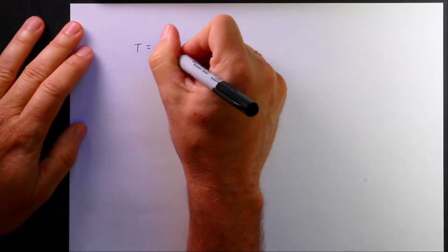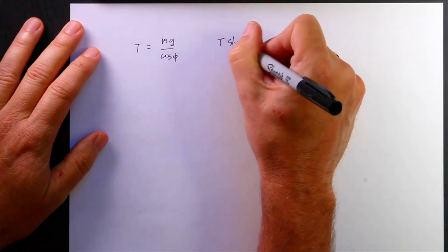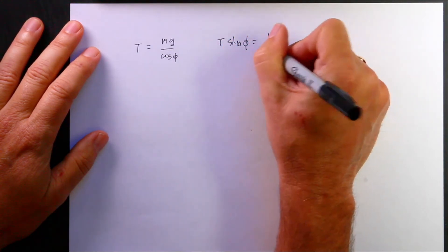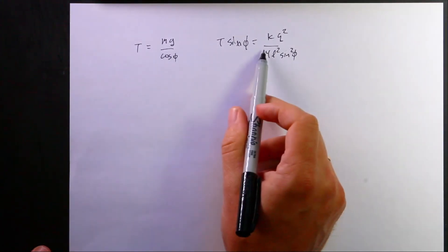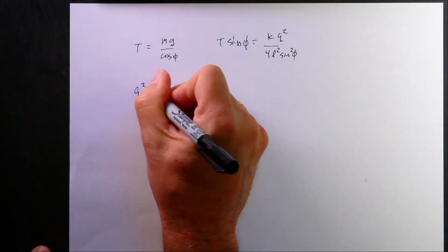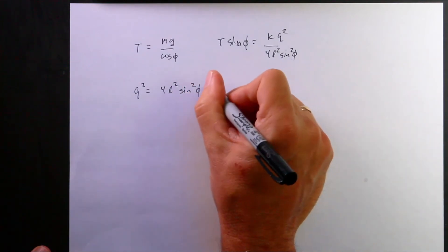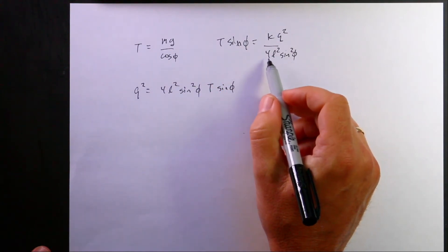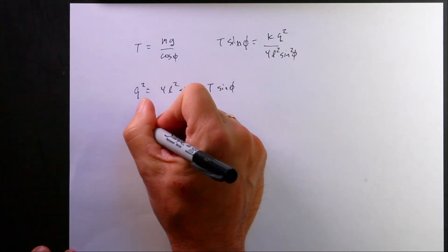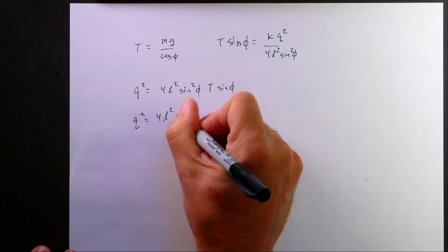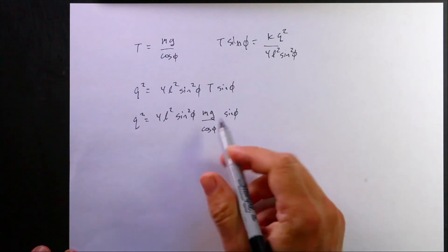So I have T equals Mg over the cosine of phi. And then I have, I'm going to rewrite this as T sine phi equals K Q squared over 4L squared sine squared phi. If I substitute in this T and, let's solve this for Q first. So I'm going to say Q squared is going to be equal to 4L squared sine squared phi times T sine phi. So I just multiply both sides by that. And this seems kind of weird because I'm going to get a sine cubed. But I'm just going to go along with it. And then I can substitute in my T value right there and I get Q squared equals 4L squared sine squared phi Mg over cosine phi sine phi.